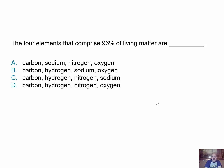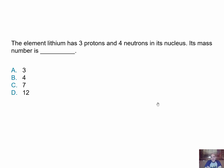Practice questions: The four elements that comprise 96% of living matter are — A, carbon, sodium, nitrogen, and oxygen; B, carbon, hydrogen, sodium, and oxygen; C, carbon, hydrogen, nitrogen, and sodium; or D, carbon, hydrogen, nitrogen, and oxygen? And: the element lithium has three protons and four neutrons in its nucleus — what is its mass number? Is it A, 3; B, 4; C, 7; or D, 12?